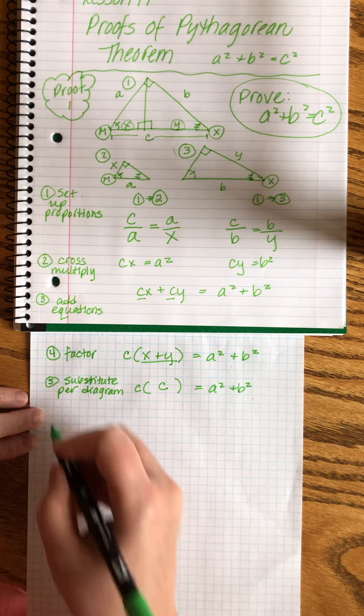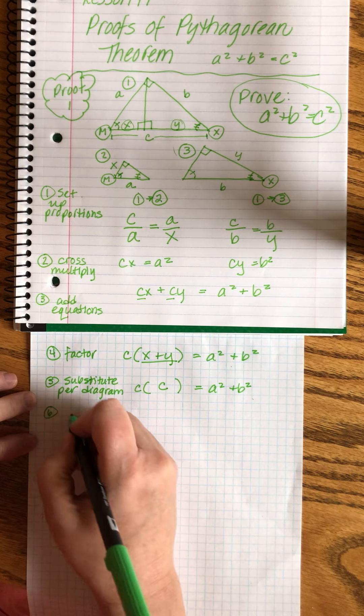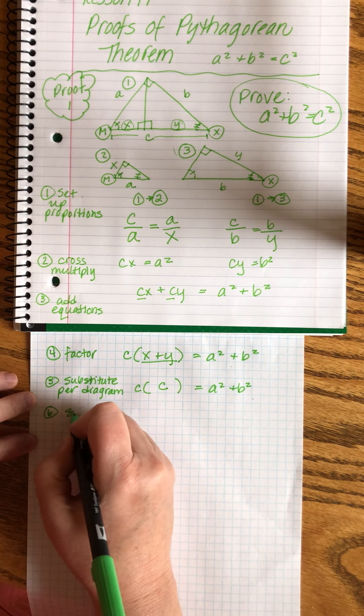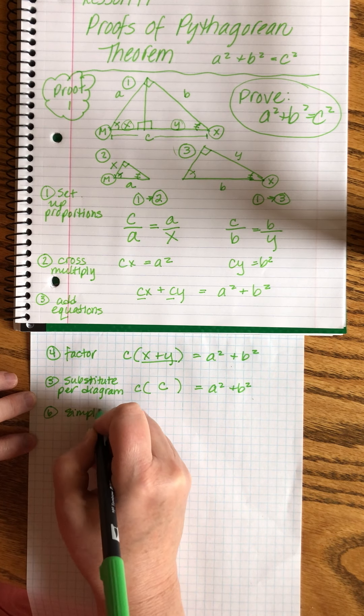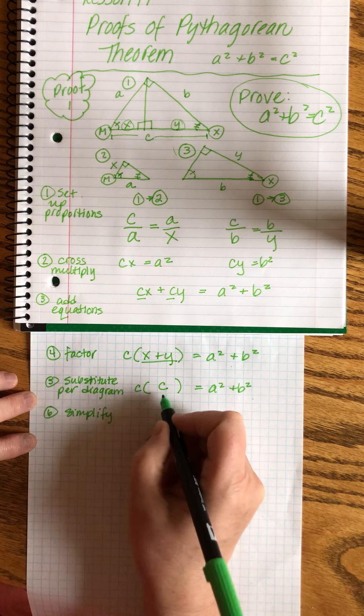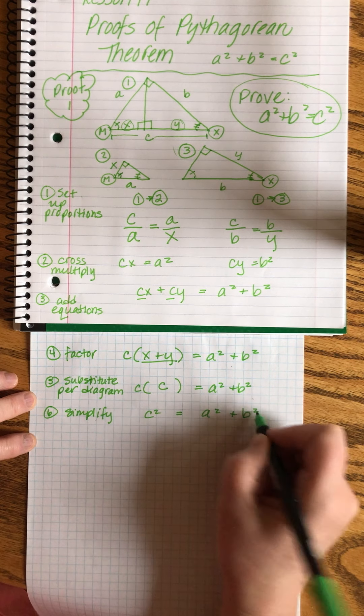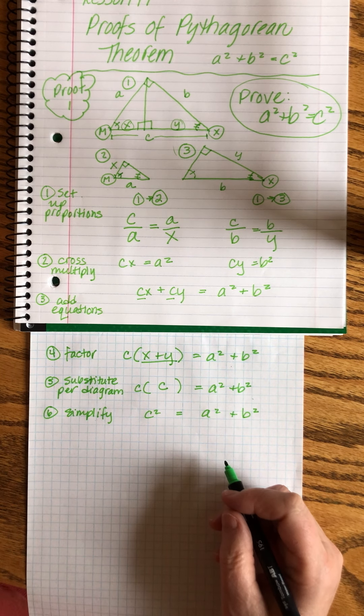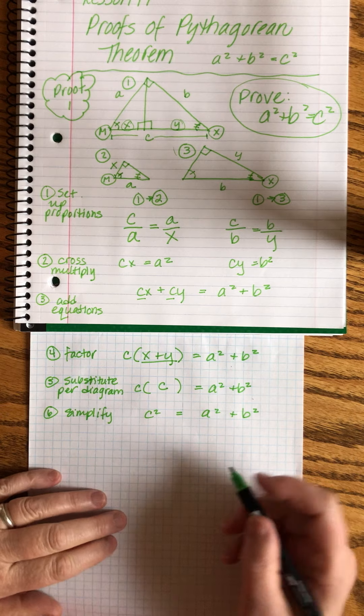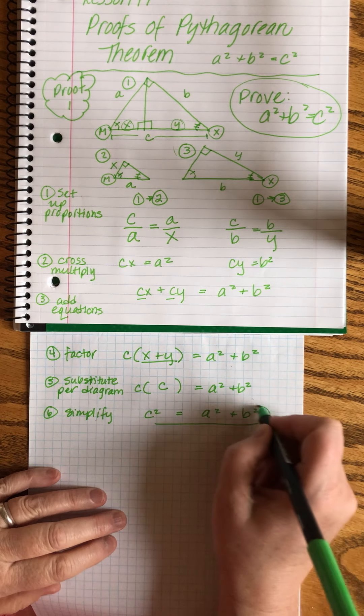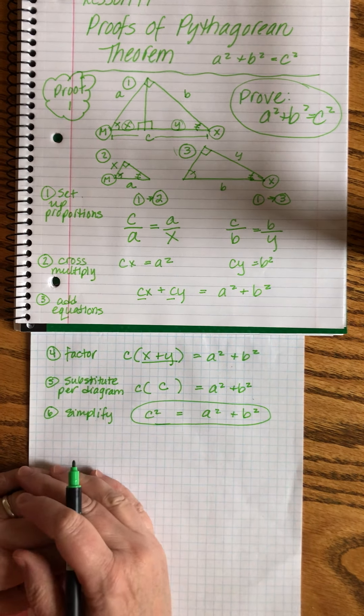And then my last step is to simply simplify. Simply simplify. C times c is c squared. Proved it. Yay. That's what we were trying to prove. And that is exactly what we proved.